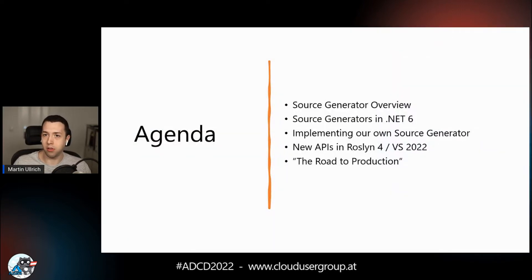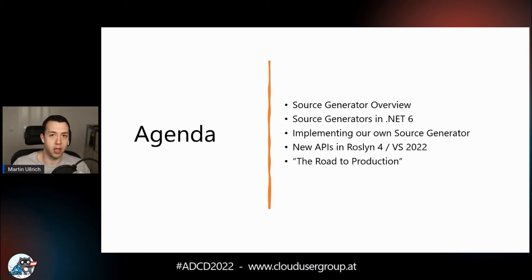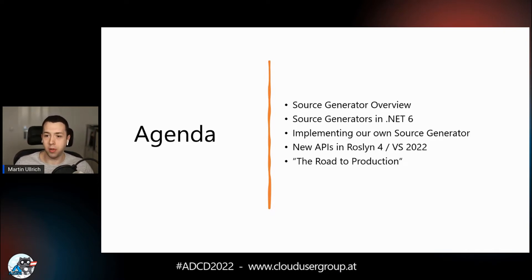I'll give a short overview of the different techniques in meta programming that are popular in .NET. We'll also look at how source generators are used in .NET 6, so if you're upgrading you can take advantage of new features. Then I'd like to implement a source generator with you, and cover what changed in Visual Studio 2022 which gives a new API for writing source generators, and give you tips on publishing your own.